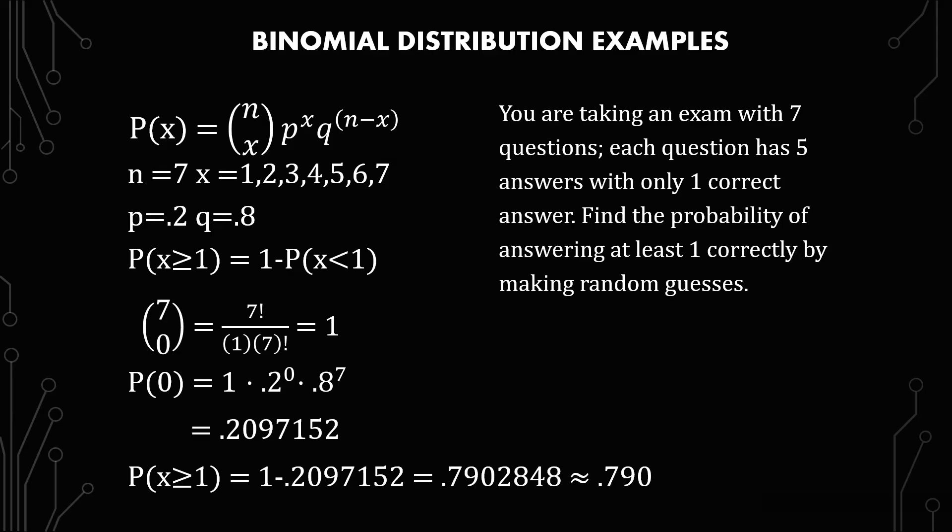you round after you subtract it from 1. So the probability of x greater than or equal to 1 equals 1 minus 0.2097152, which gives us 0.7902848 or 0.790, obviously using significant figures here for all those physics and chemistry students. This is the probability that you would have at least one correct answer on that exam.